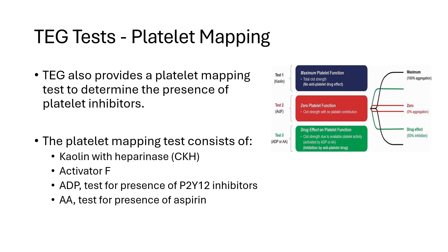The first is a kaolin TEG with heparinase to determine the baseline maximum amplitude. Next is a test called the activator F-test, similar to the CFF test, to determine fibrinogen's contribution to the maximum amplitude. Next, two tests are run — one with ADP and one with arachidonic acid. The ADP test will test for the presence of a P2Y12 inhibitor, and the arachidonic acid test will test for the presence of aspirin. Comparing the maximum amplitude from the platelet activator tests with that from the CKH heparinase test will determine whether or not platelet inhibitors are present.